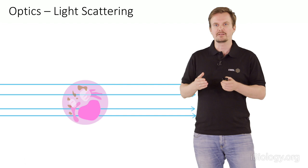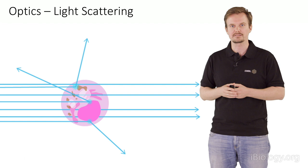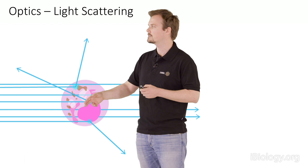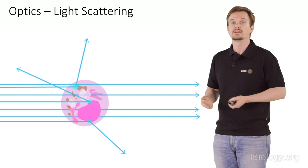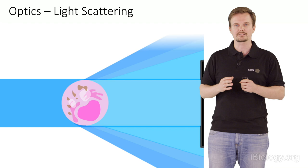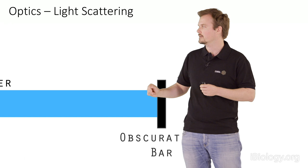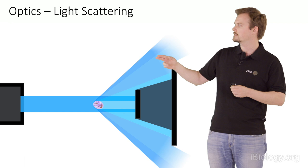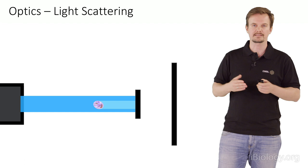Cells are largely transparent — most light passes through — but some light interacts with the cell as it moves through the laser beam, due to different optical densities: vesicles, the nucleus, and structures like the Golgi or ER. All these generate scattering. Scattering is omnidirectional, but we pick up only the light in the direction of the laser beam — obstructed by our obscuration bar — collecting only a very small proportion, typically between 10 and 20 degrees of angle. Light that scatters and hits our detector generates a signal proportional to scattering intensity.